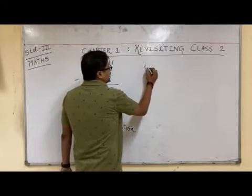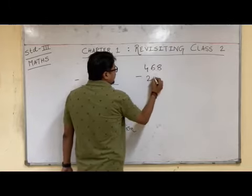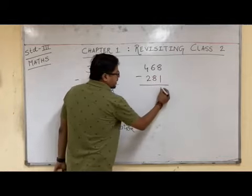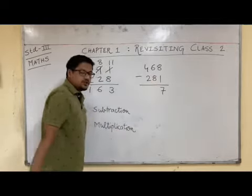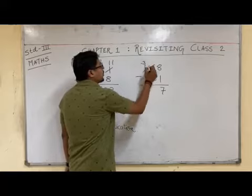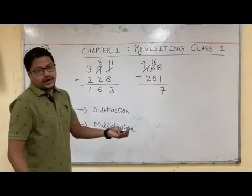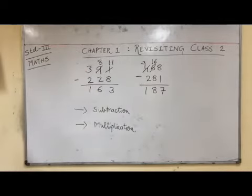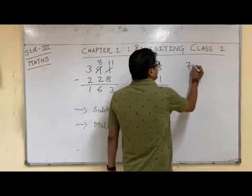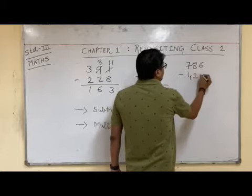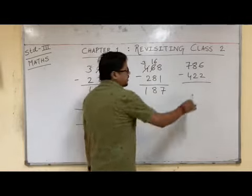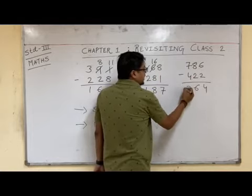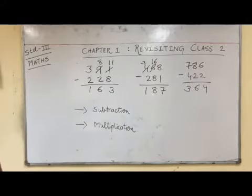Let us take one more sum: 468 minus 281. 8 minus 1 is 7. 6 minus 8 is not possible, so we borrow 1 — this becomes 16. 16 minus 8 is 8. 3 minus 2 is 1. Answer is 187. Now 786 minus 422, without borrowing: 6 minus 2 is 4, 8 minus 2 is 6, 7 minus 4 is 3. Answer is 364. This is how we were doing subtraction in class 2.